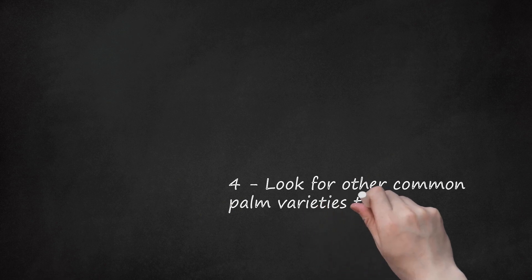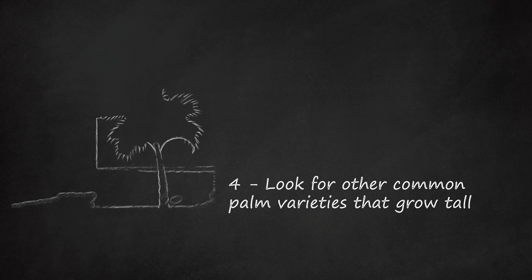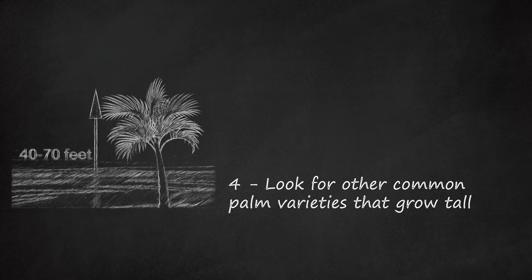Fourth, look for other common palm varieties that grow tall. If you come across a towering tree, it is likely to be one of the more common tall varieties. These trees usually have a long maturation and will not reach their height until they have had many years to grow. If you see a tree that is over 20 feet tall, you can be sure that it is an older tree and that it is a tall variety of palm.